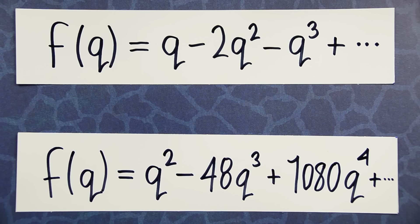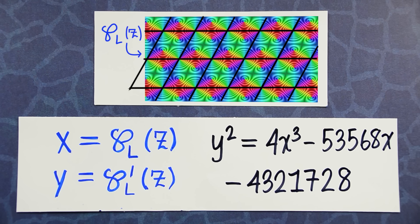But we started off the video wanting to know, what is the hidden meaning of the coefficients of this modular form? The point that we're leading up to is that they are exactly reflected in the number theory of this elliptic curve. But how is that so?